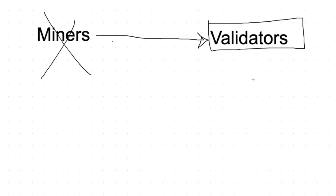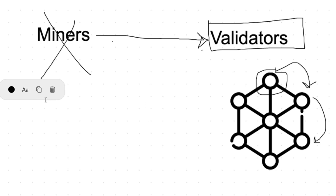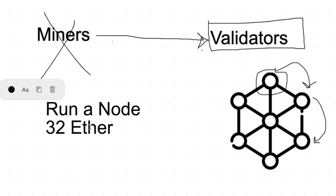What validators do is they participate in running the blockchain. The blockchain is a peer-to-peer network of nodes that all talk to one another, and each of these nodes is a computer. We're going to set up a node today so that you can stake your ETH. To become a validator on the Ethereum 2.0 network, you need two things: you need to run a node, and you also need 32 ETH — the native cryptocurrency of the Ethereum blockchain. You run a node and then stake 32 ETH to it for running the network.